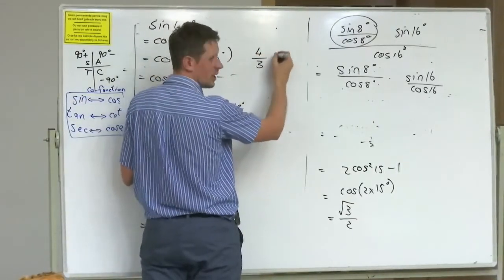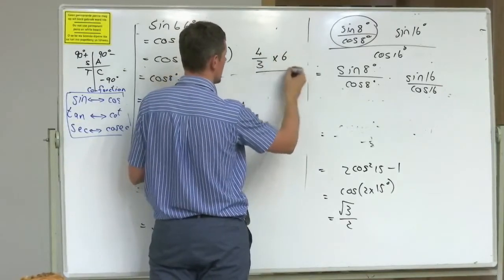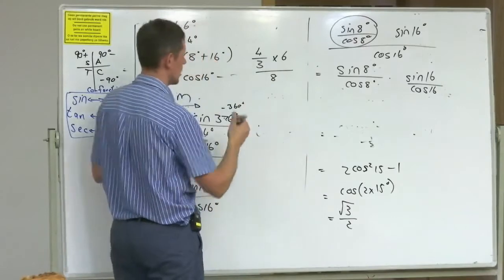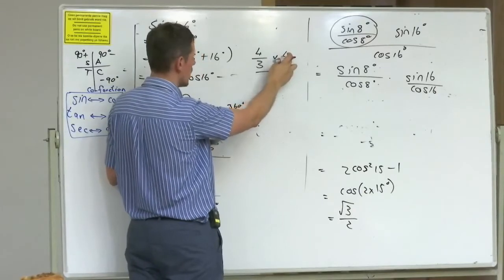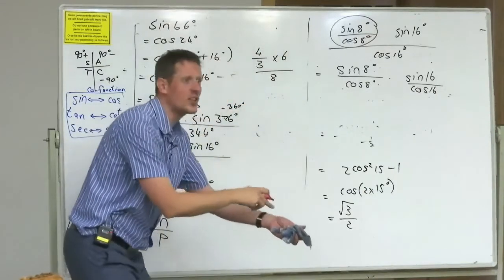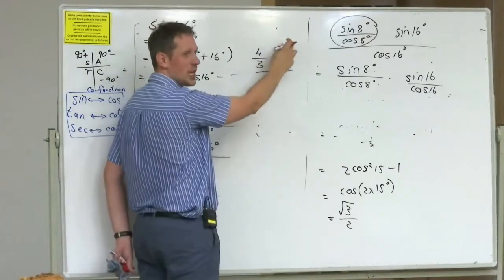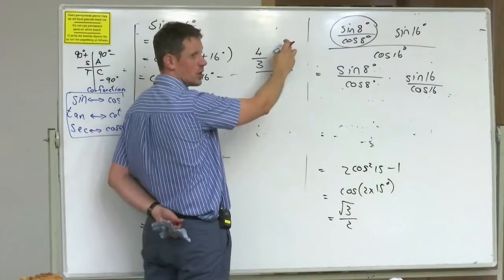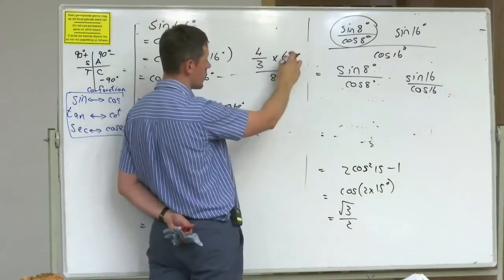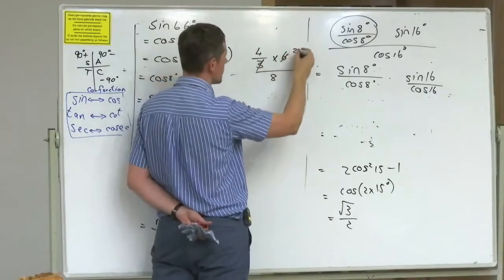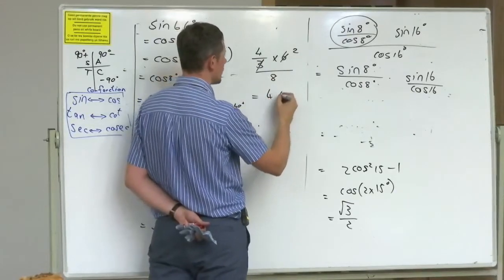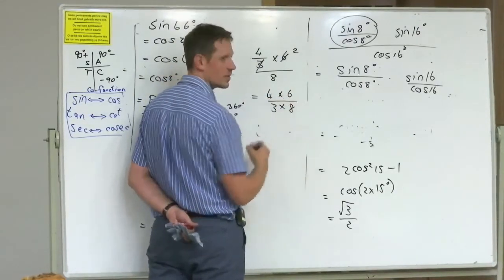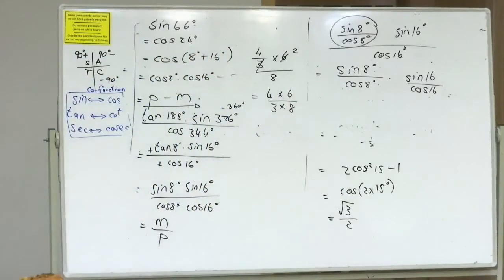If I go 4 over 3 times by 6 over 8, 3 goes into 6 twice. 4 times 2 is 8. Divided by 8 is 1. Okay. Now what about 4 times 6 over 3 times 8? Drop the mic.